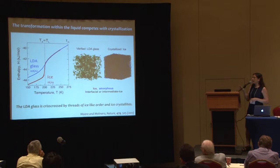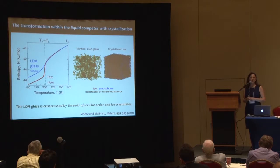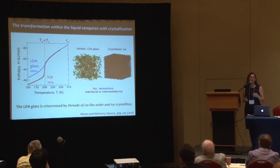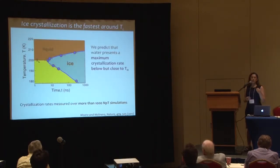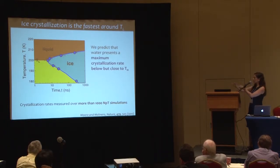The LDA glass is crisscrossed by threads of ice-like order and ice crystallites — this is what really produces crystallization on re-warming. The temperature of crystallization being the same as the temperature of liquid transformation implies that the rate of crystallization has a maximum at that point. In isothermal crystallizations — waiting at one temperature across hundreds of simulations — we derive crystallization times and show a temperature-time transformation (TTT) diagram for MW water.